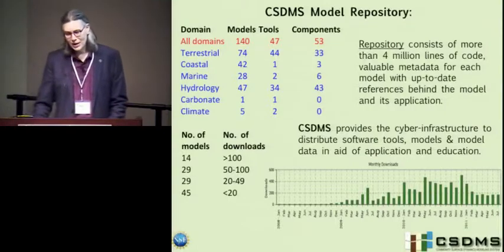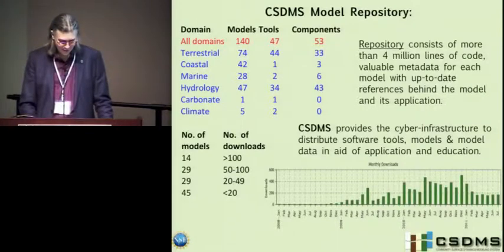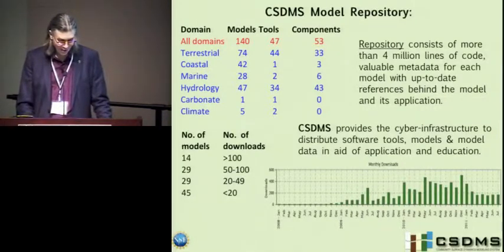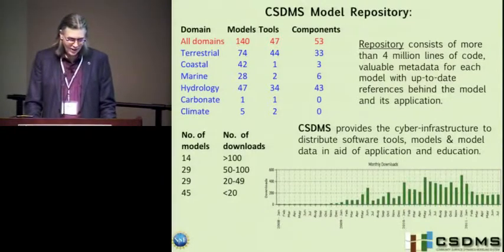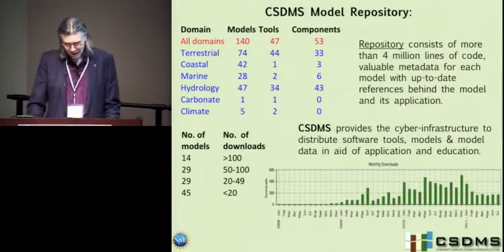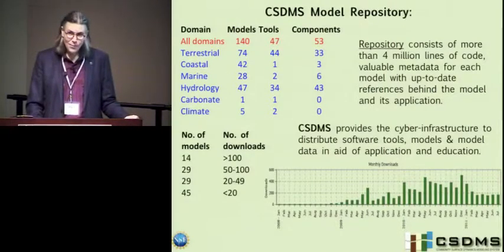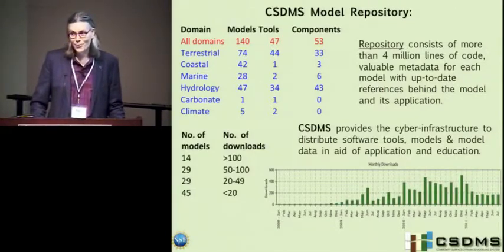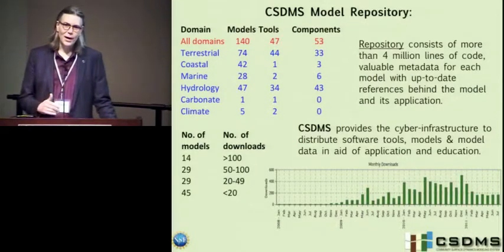In terms of downloads, a graph shows the kind of downloads we get. Interestingly, wintertime and Christmastime people seem to go into their computers at home, tired of the holidays, and download models. Not counting this year, last year we had up to 7,000 downloads. We have about 14 models that get a lot of downloads — they're obviously popular. This provides us feedback on which ones we should put effort into making plug-and-play.